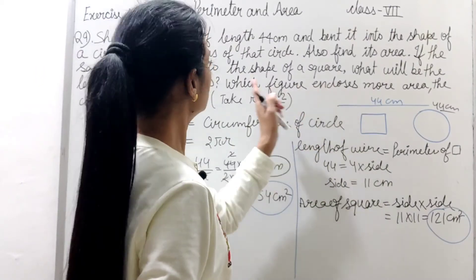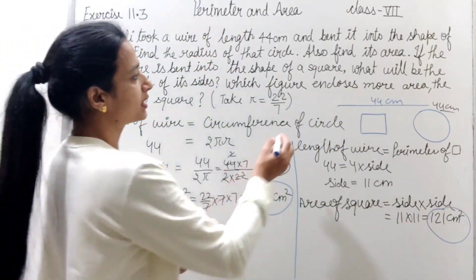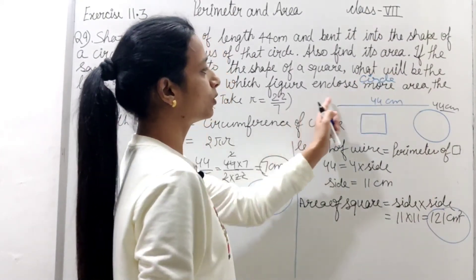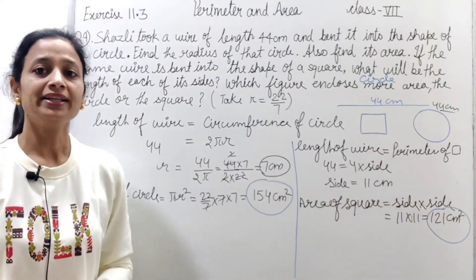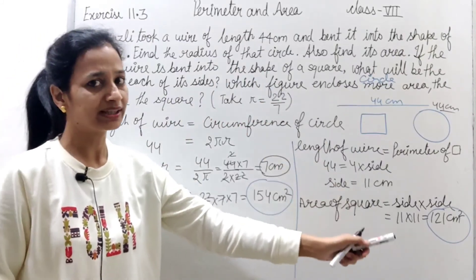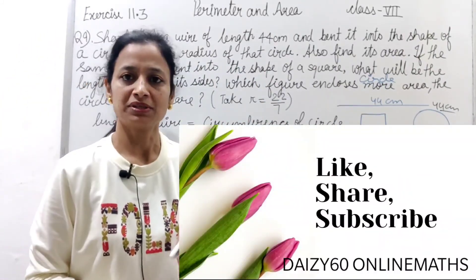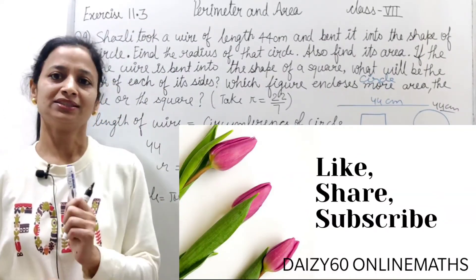To iska answer kya ho jayega? Which figure encloses more area? To kya ho jayega yahan par? Circle. Circle encloses more area iske compare mein square ke. So I think aapko samajh aa gaya hoga. Humne question ko kaise kiya hai? Step by step chalte gaye hai and question apne aap solve hota gaya. To samajh aa hai to video ko like karna, channel ko subscribe karna bilkul mat bhuliyega. Thank you.